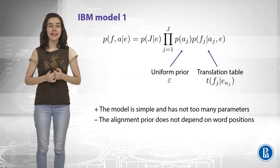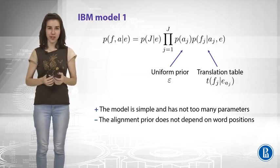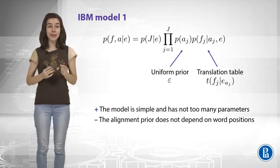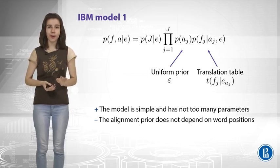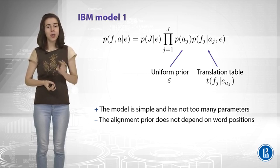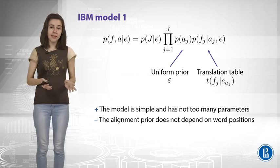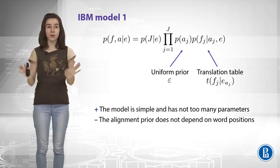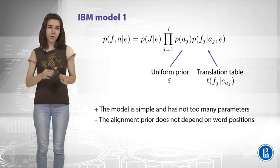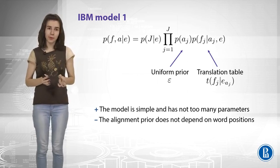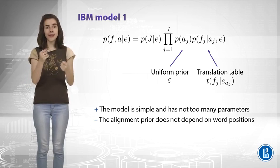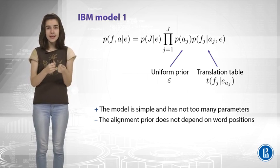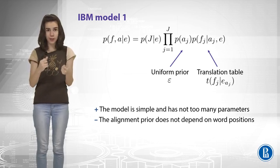The first IBM model is the first attempt to simplify this generative story. So what it says is let us forget about the priors for word alignments. Let us have just uniform prior. And this prior will know nothing about the positions, but it will have just one constant to tune. So this is awesome. Now the translation table will be also very simple.